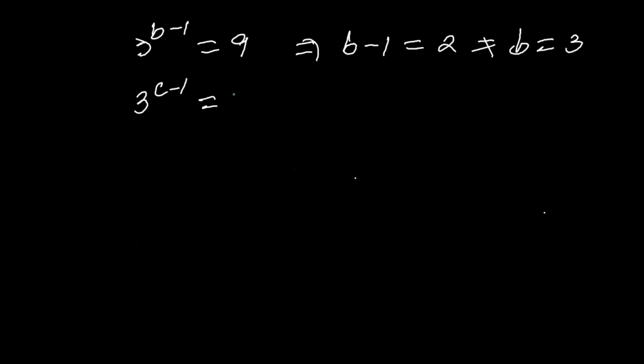And 3 raised to the power C minus 1 equals 27, which means C minus 1 equals 3, so C equals 4.